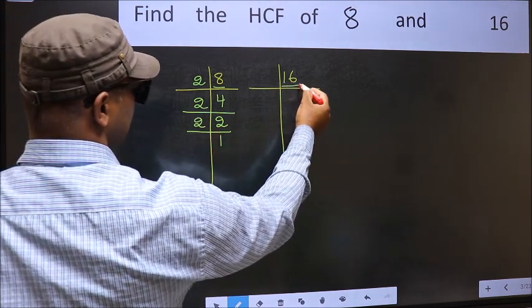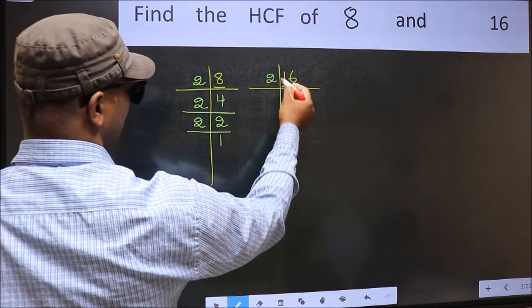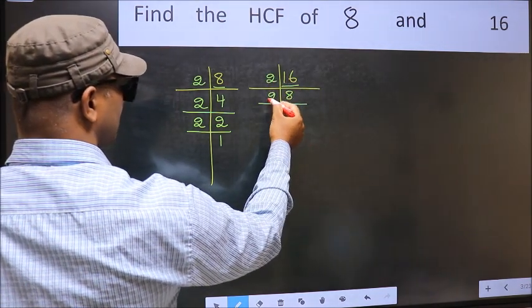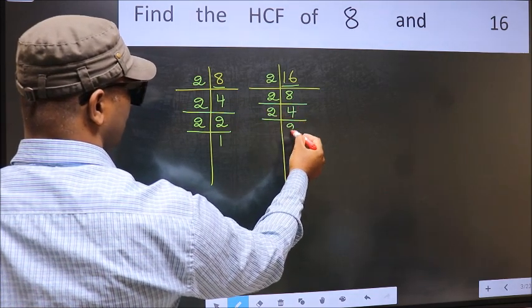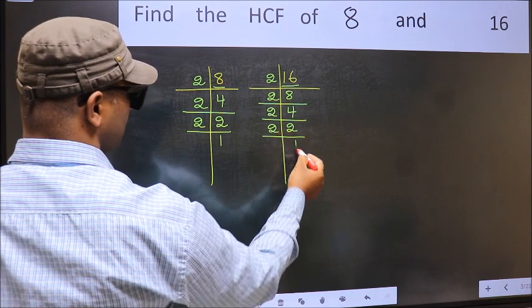Now the other number 16. 16 is 2 8s 16. 8 is 2 4s 8. 4 is 2 2s 4. 2 is a prime number so 2 1s 2.